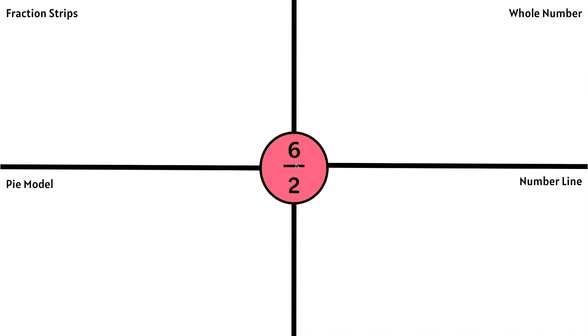Now it's your turn to represent 6 halves using fraction strips, identify what whole number it represents using a pie model, and show 6 halves on a number line.